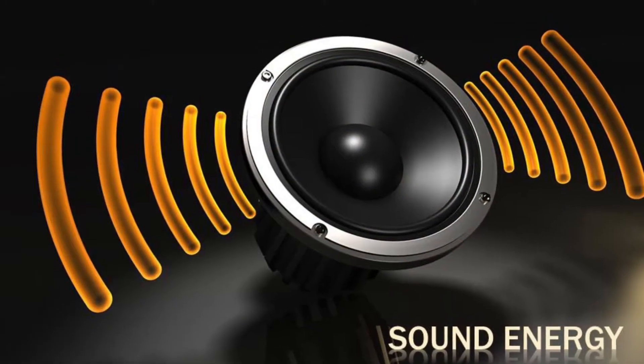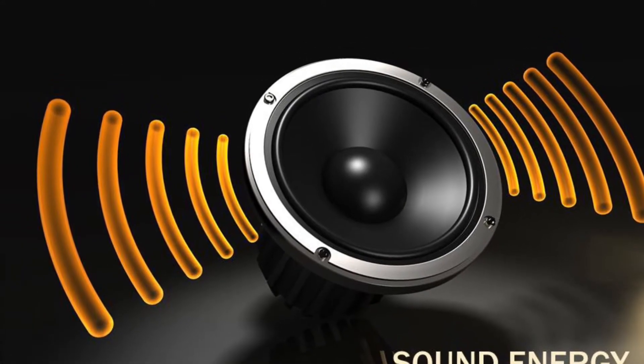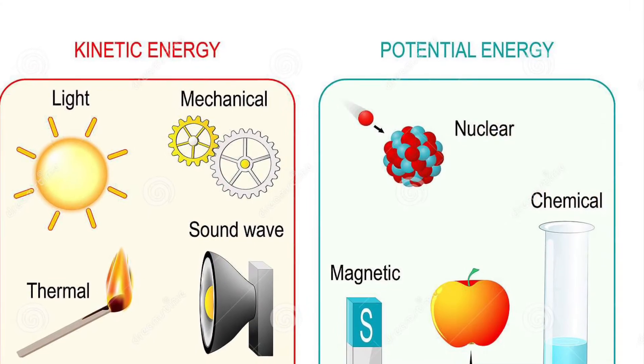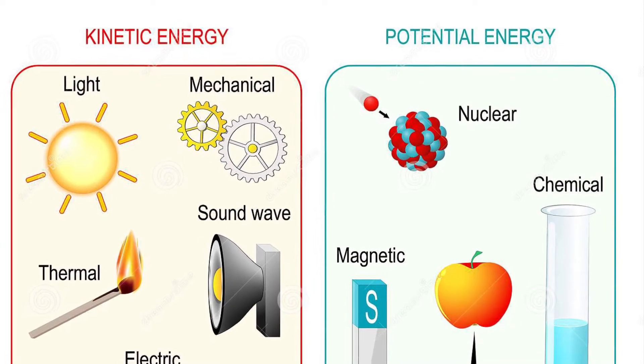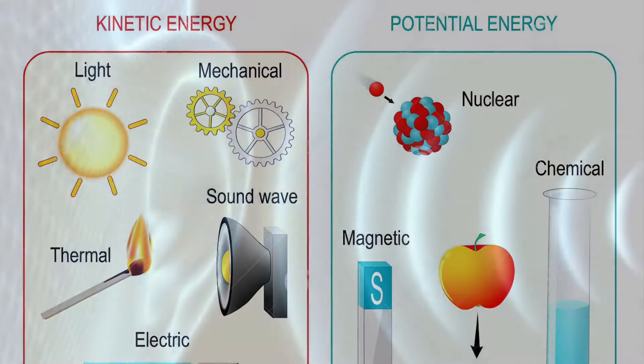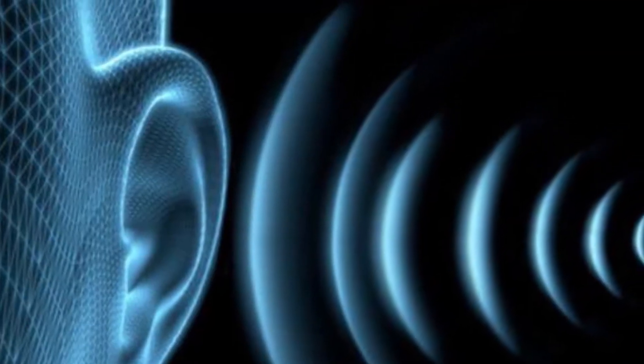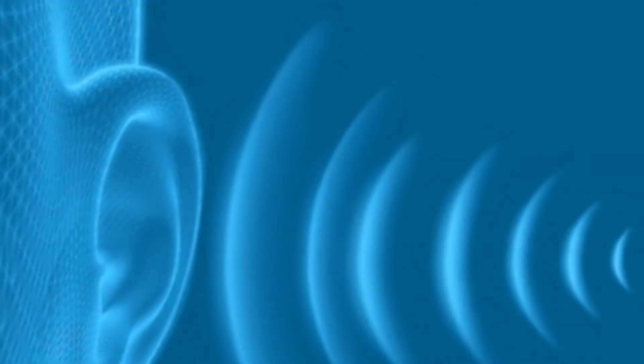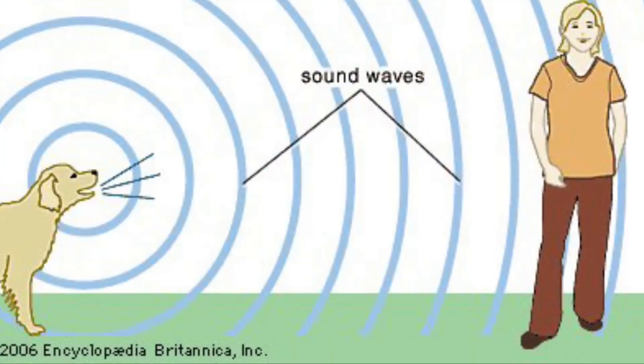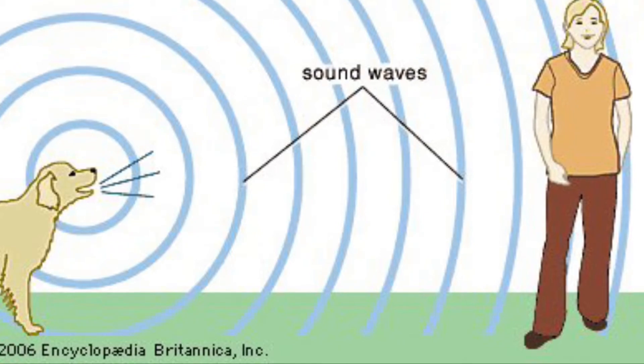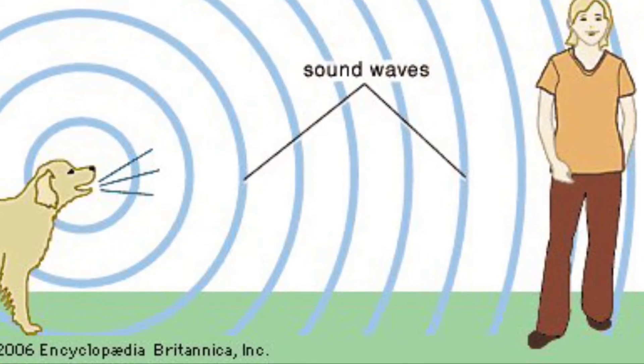Let's talk about sound energy. Sound is energy that we can hear. It's a type of kinetic energy that moves through the air and through other matter in the form of sound waves. Sound is made when a force acts on an object and makes it vibrate. The vibration pushes against matter, such as air, and moves away from the force through the matter in the form of a sound wave.